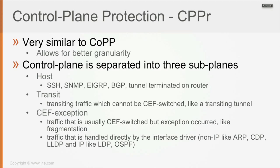The CEF exception sub-interface handles traffic that is usually CEF-switched but where an exception occurs — for example, when fragmentation is needed. In general, an IP packet transiting the router is CEF-switched, but if it needs to be fragmented, that becomes a CEF exception because only the CPU can perform the fragmentation.